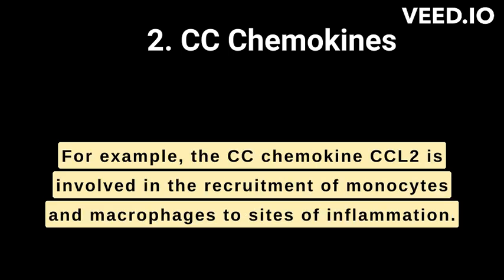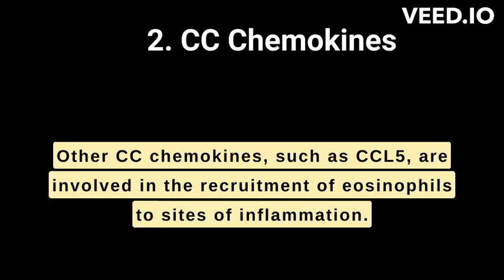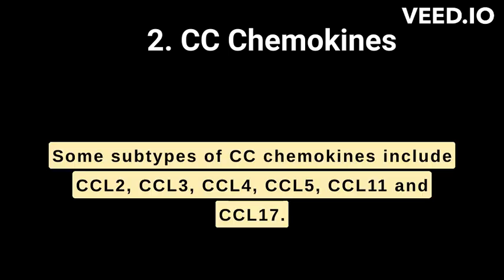For example, the CC chemokine CCL2 is involved in the recruitment of monocytes and macrophages to sites of inflammation. Other CC chemokines, such as CCL5, are involved in the recruitment of eosinophils to sites of inflammation, source PMID 27096103. Some subtypes of CC chemokines include CCL2, CCL3, CCL4, CCL5, CCL11, and CCL17.